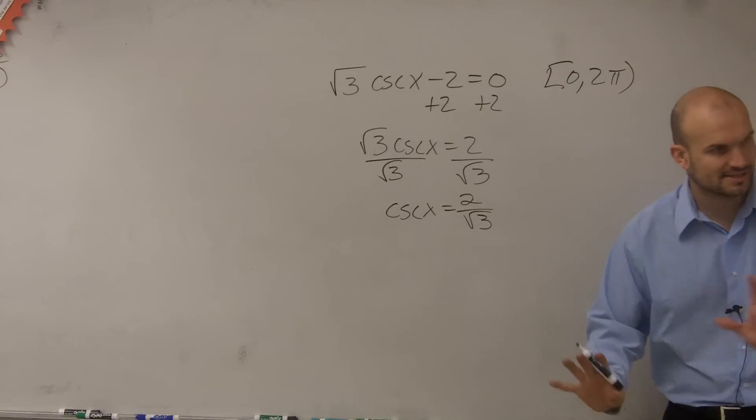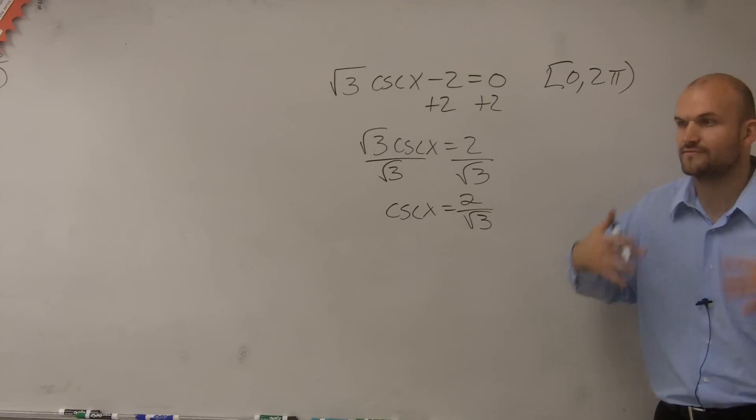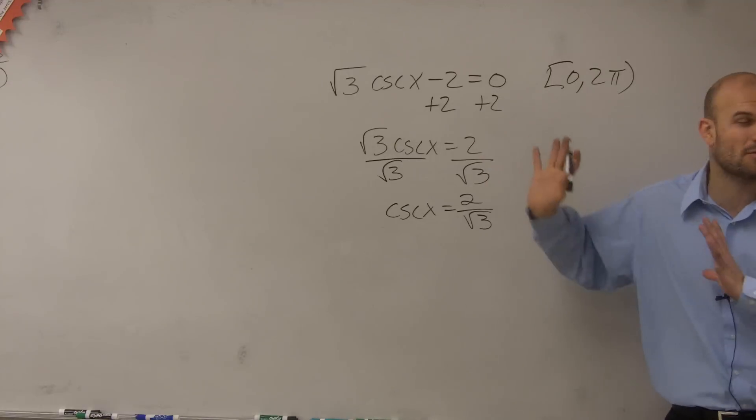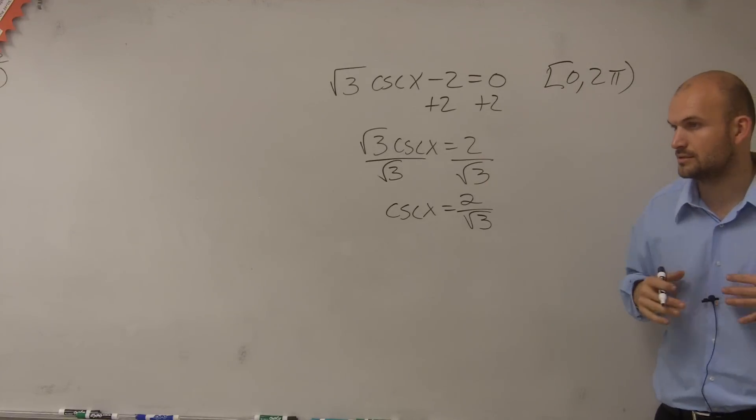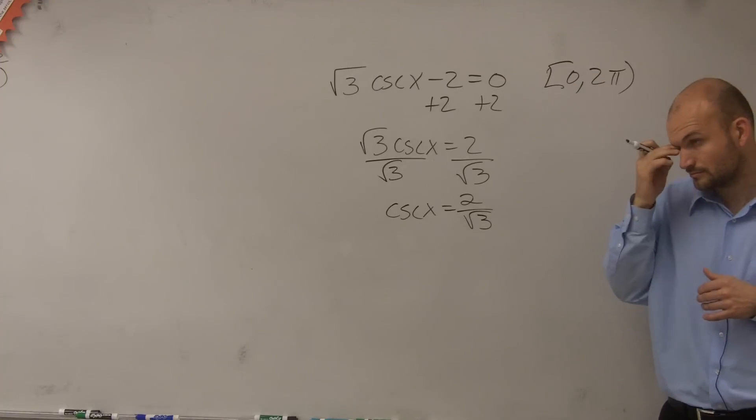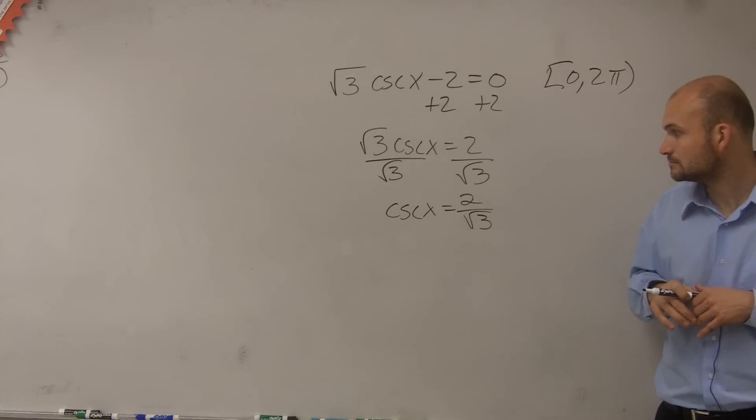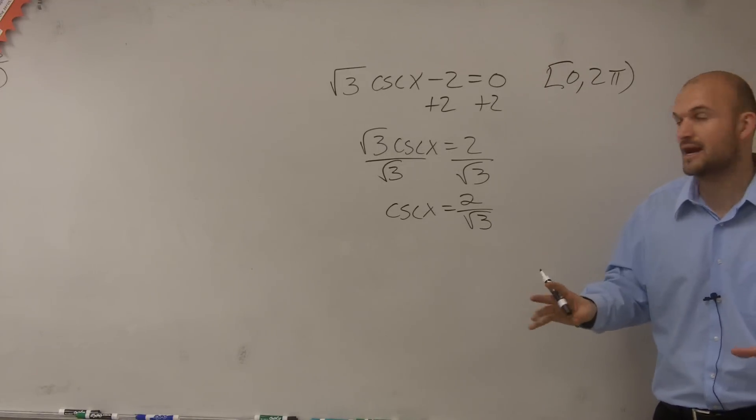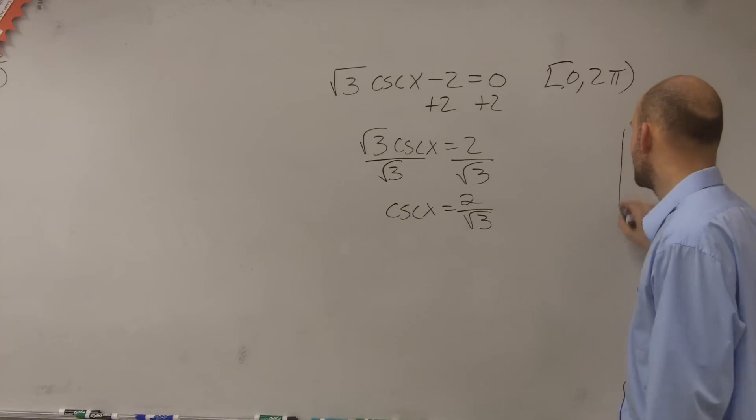Now before I go and rationalize the denominator, which we've ingrained on us, right? Oh, we've got to rationalize the denominator. Before we get to that, we can actually work another step. Yes? I was going to say, this is the square root that you can't have a square root on the denominator. Right, so we'd rationalize the denominator. But before we just automatically rationalize the denominator, let's take a look at our unit circle.